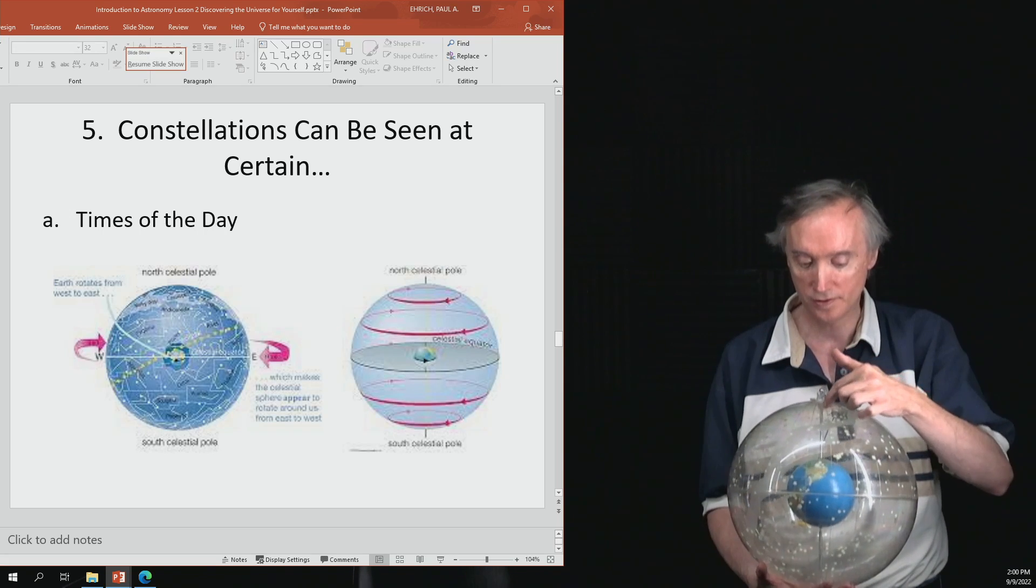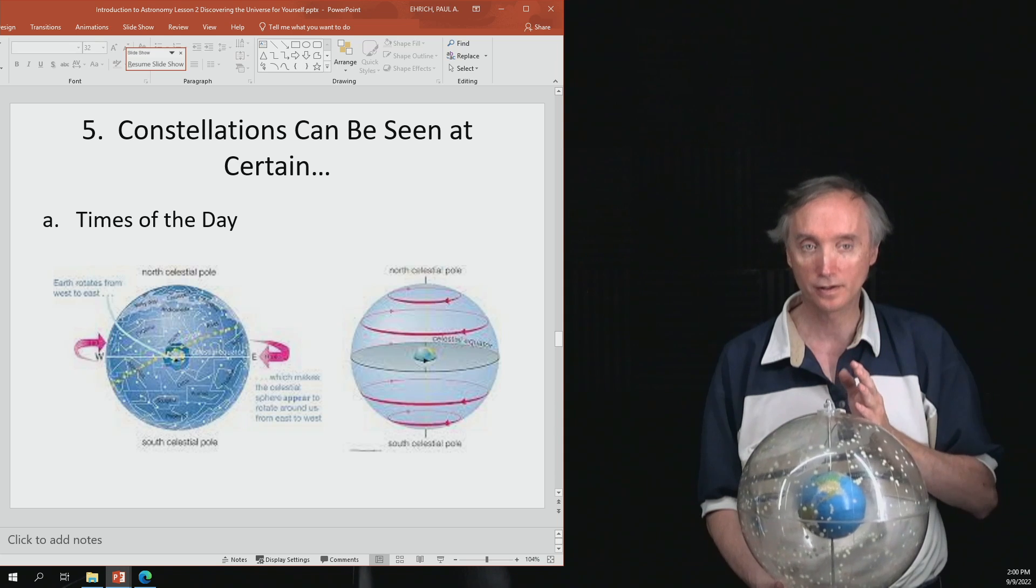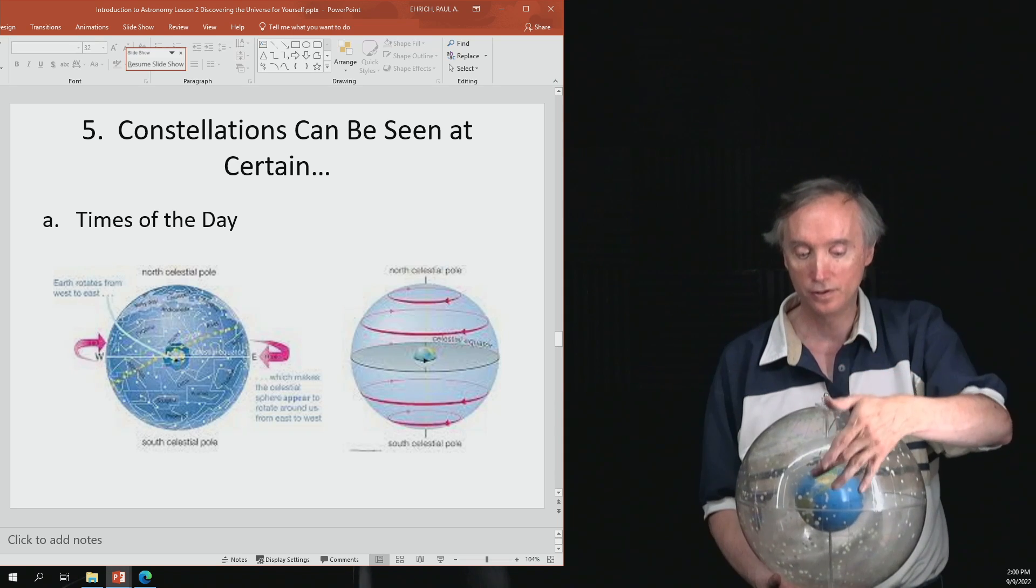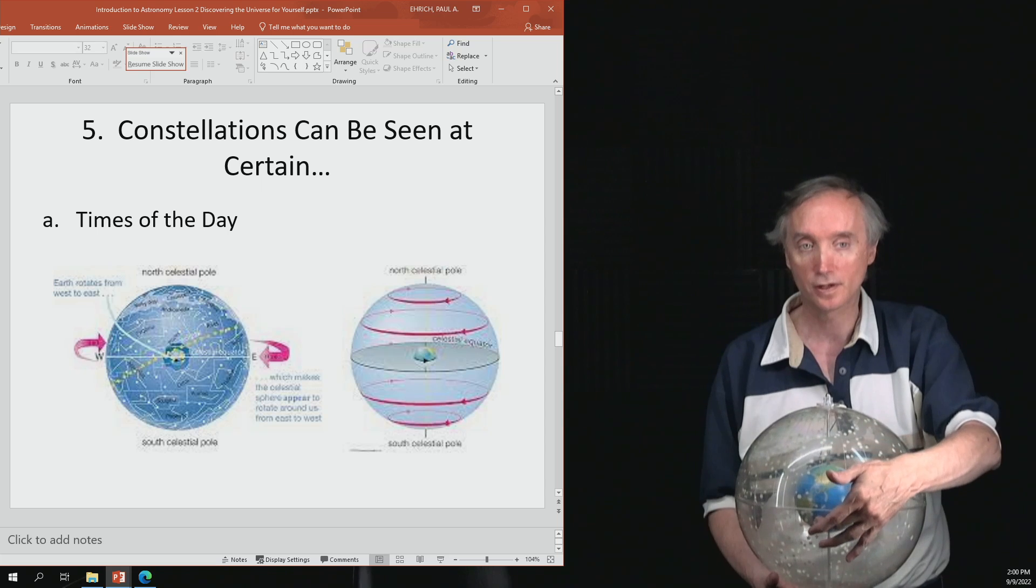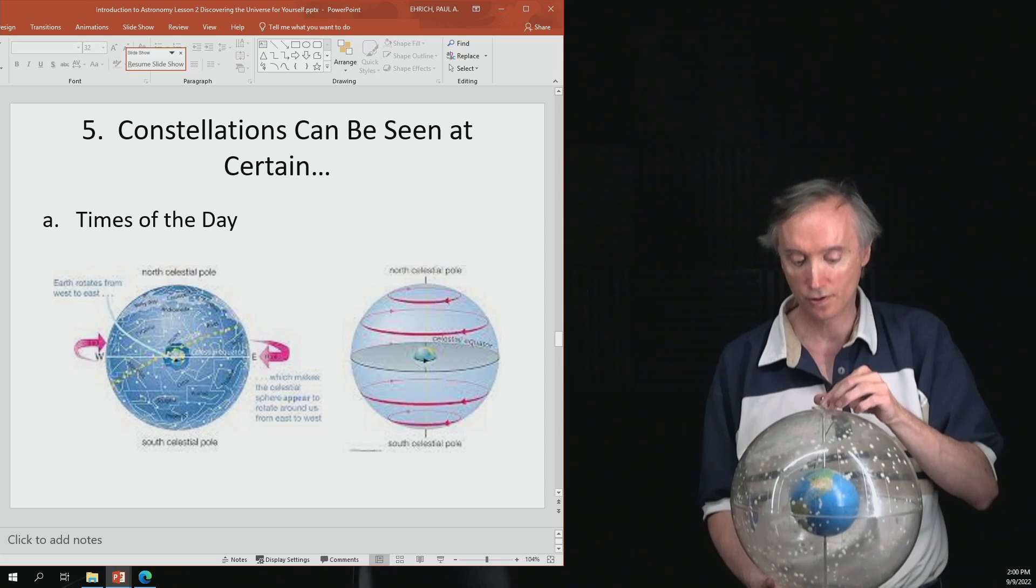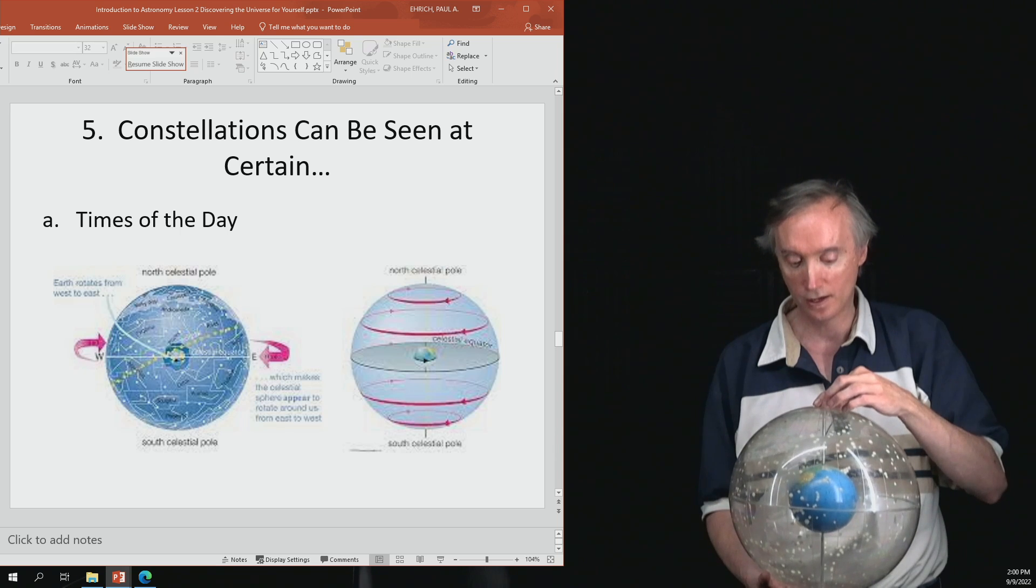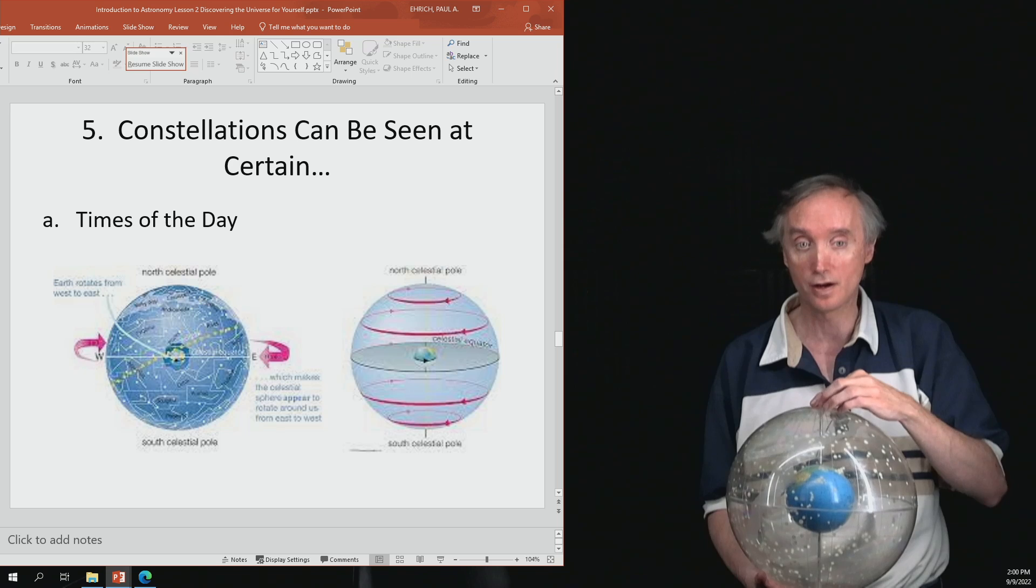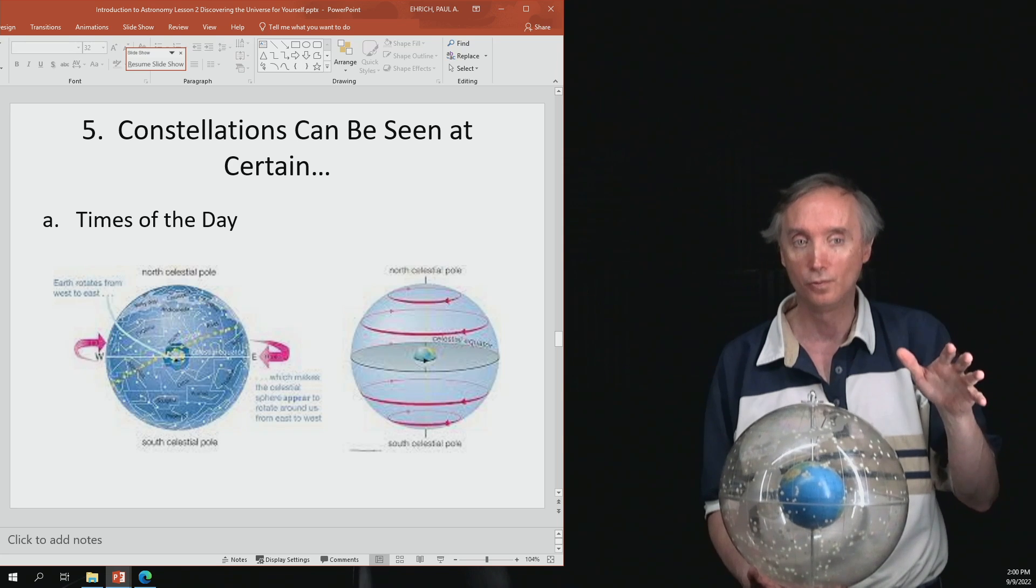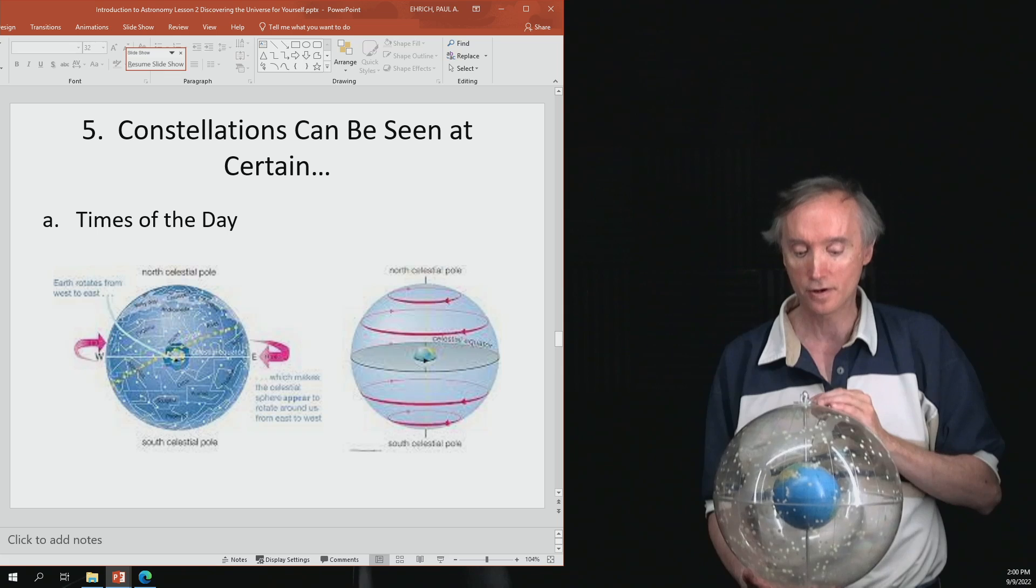Let's say that you're in the United States here, and you are looking directly over your head. You're going to see certain constellations. But then, because the Earth is rotating, we can rotate the Earth, and we need to rotate the Earth counterclockwise. We'll find out later why. But if we rotate it counterclockwise and we look straight over our head,